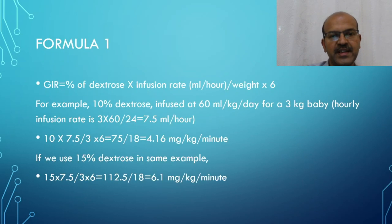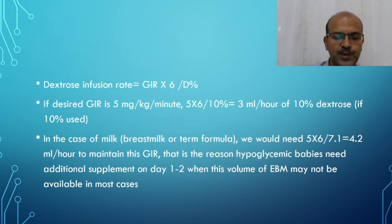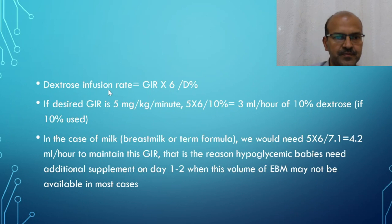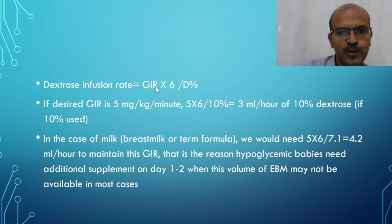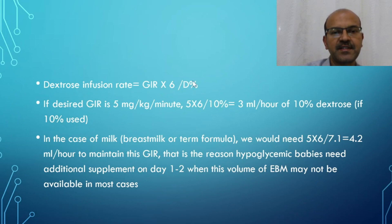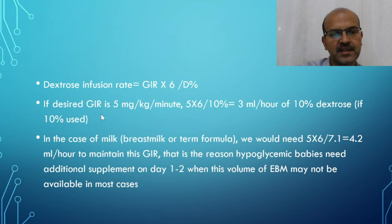You can use whichever formula suits you. If calculating TPN, you already have the infusion rate, so the weight × 6 formula is easier. The dextrose infusion rate can also be back-calculated from a desired GIR: GIR × 6 ÷ percentage of dextrose — just the reverse of the original formula. You can calculate any component by rearranging.